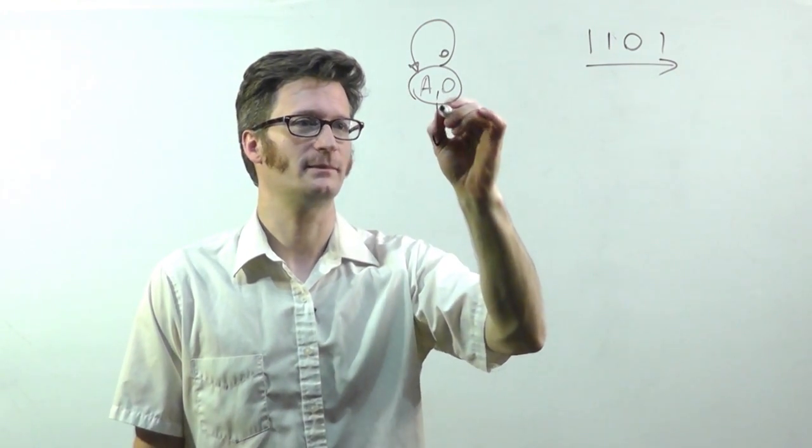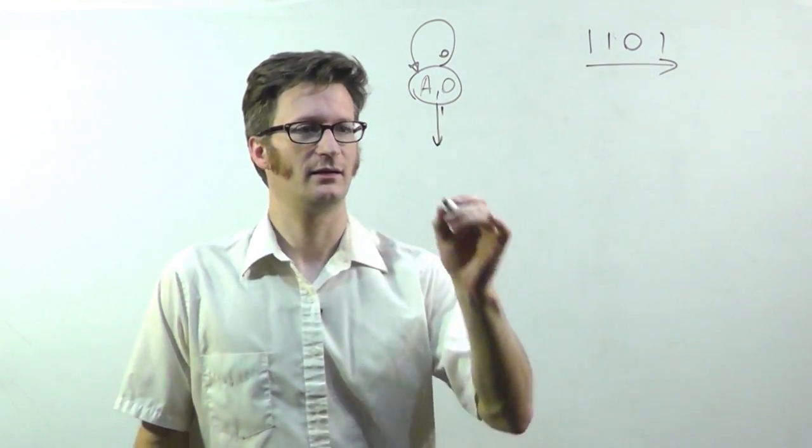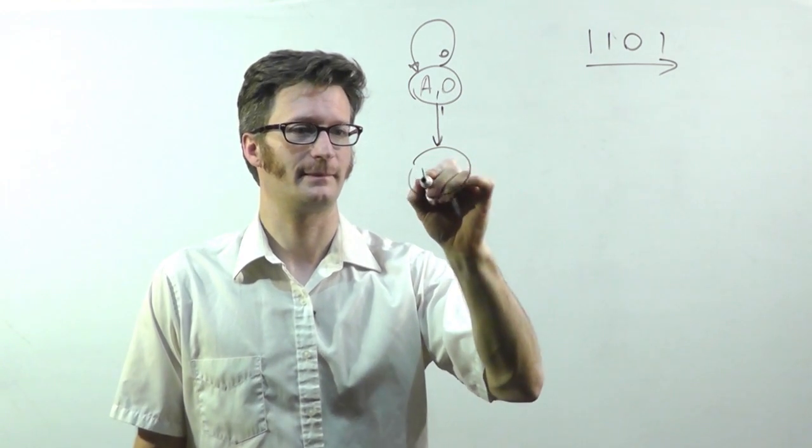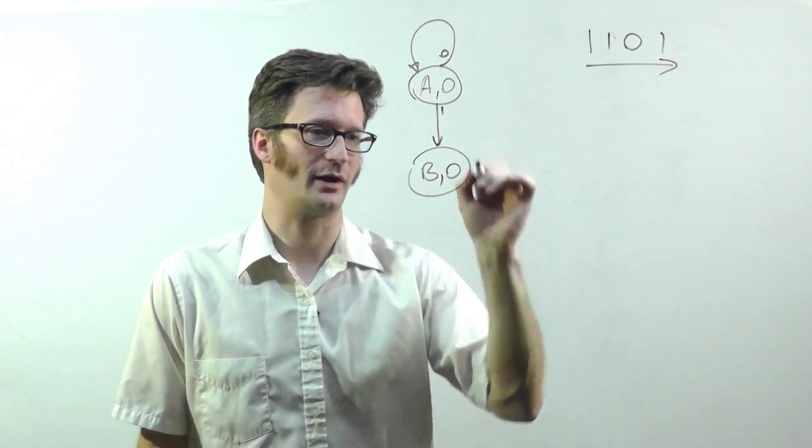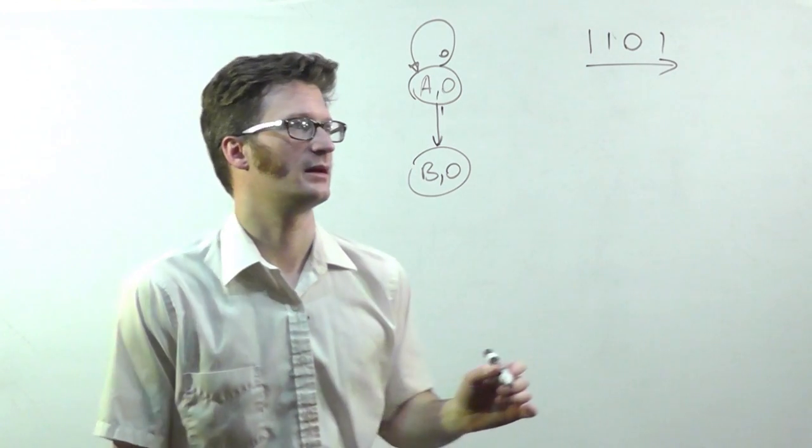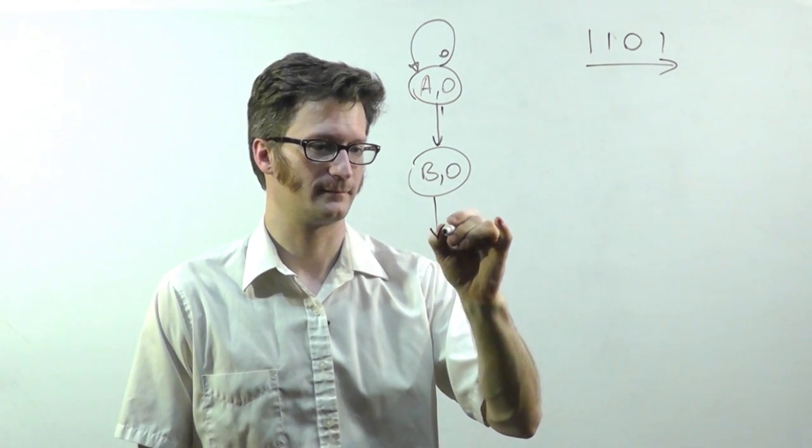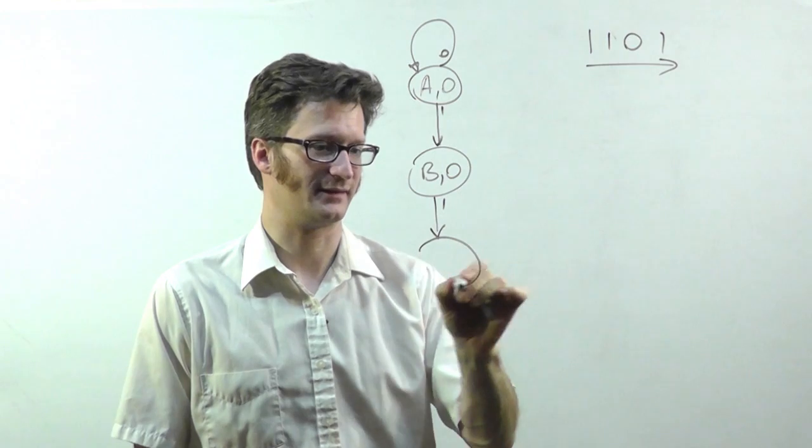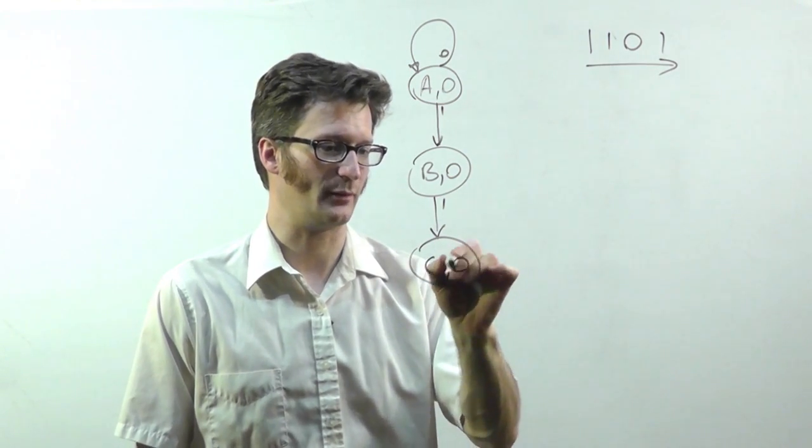If we detect a 1, then we will go to state B, which will also output 0. And we're looking for another 1 to take us to state C, which will output 0.